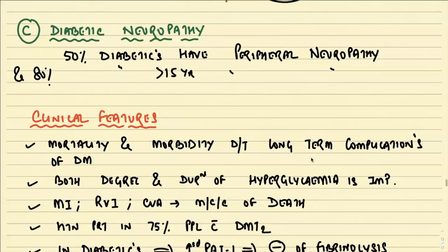Regarding diabetic neuropathy: 50% of diabetics have peripheral neuropathy, and 80% of diabetics who have had the disease for more than 15 years present with peripheral neuropathies.